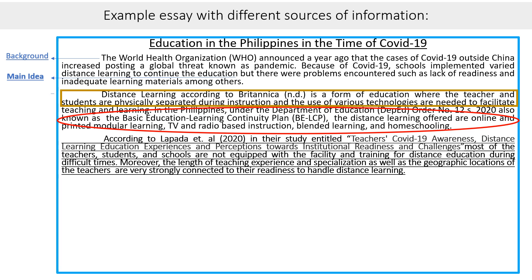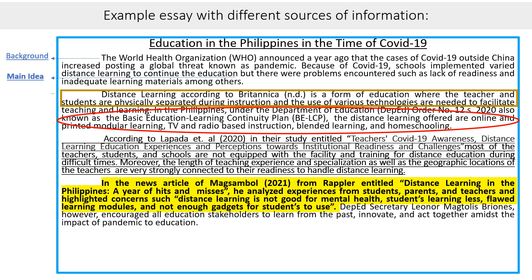Most teachers, students, and schools are not equipped with the facility and training for distance education during difficult times. Moreover, the length of teaching experience and specialization, as well as the geographic locations of the teachers, are very strongly connected to their readiness to handle distance learning. This information came from a scholarly article. In the news article by Magsambol from Rappler entitled 'Distance Learning in the Philippines: A Year of Hits and Misses,' he analyzed experiences from students, parents, and teachers and highlighted concerns such as distance learning not being good for mental health, students learning less, flawed learning modules, and not enough gadgets for students to use. This is an example of information from a news article.